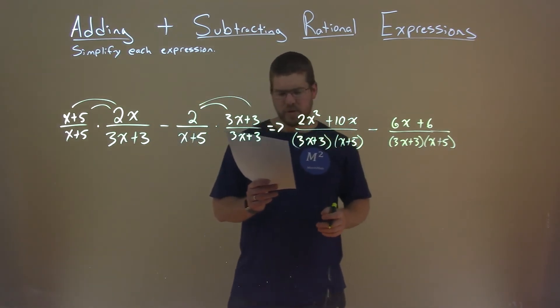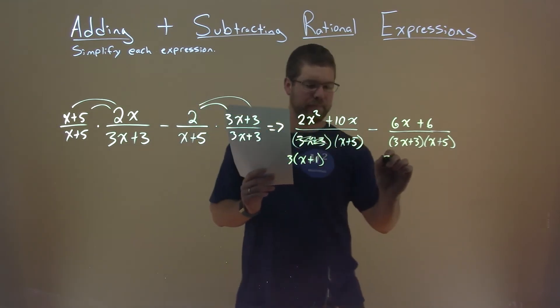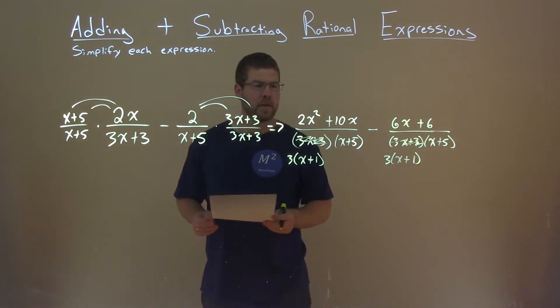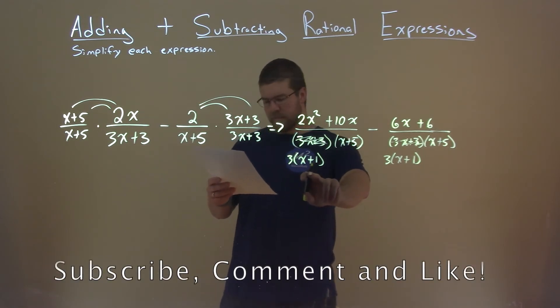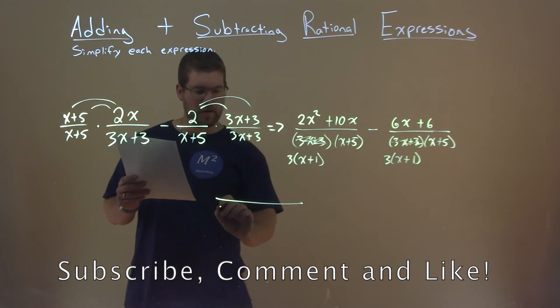Notice 3x plus 3, we can pull out a 3 as well. So let's do that: 3, and we have an x plus 1 here. Either way, our denominator is now 3 times x plus 1 times x plus 5. Let's write a common denominator here.